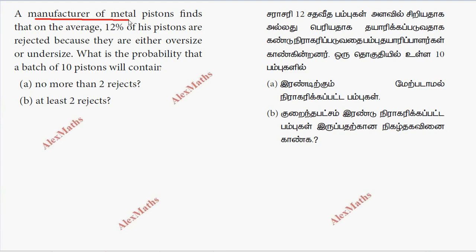A manufacturer of metal pistons finds that on the average 12% of his pistons are rejected. So this is the probability of success. 12% is rejected, which is 12 by 100. This is 0.12.